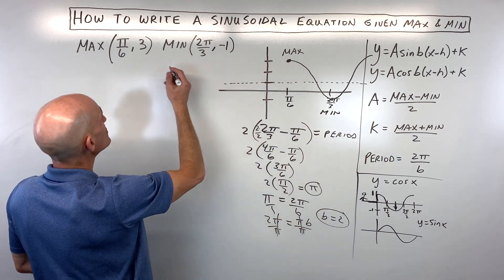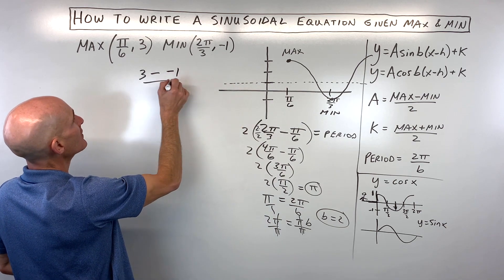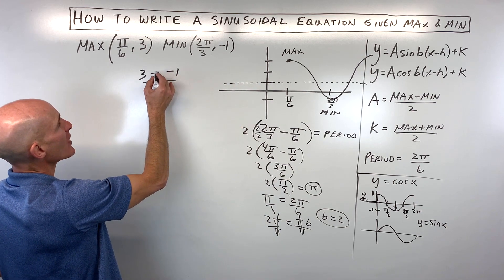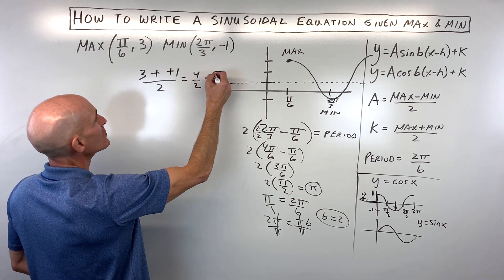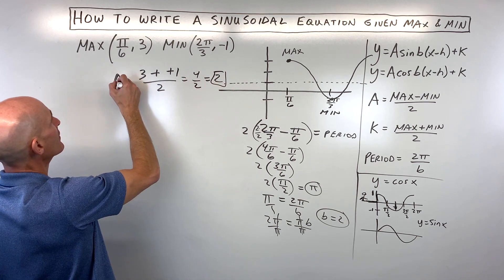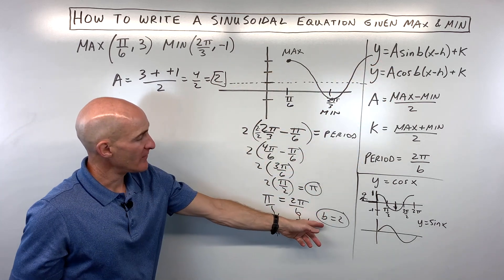The max minus the min divided by 2. So let's go ahead and do that. So we have the max, which is 3, minus the min, which is negative 1, divided by 2. When you subtract, it's like adding the opposite. That's 4 over 2, which is equal to 2. So that's going to be our a value, our amplitude, our vertical stretch. We've got our b value, which is 2.